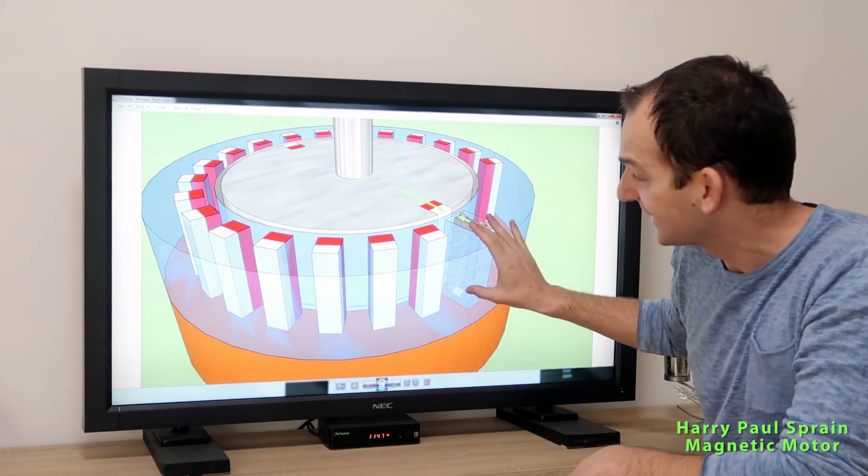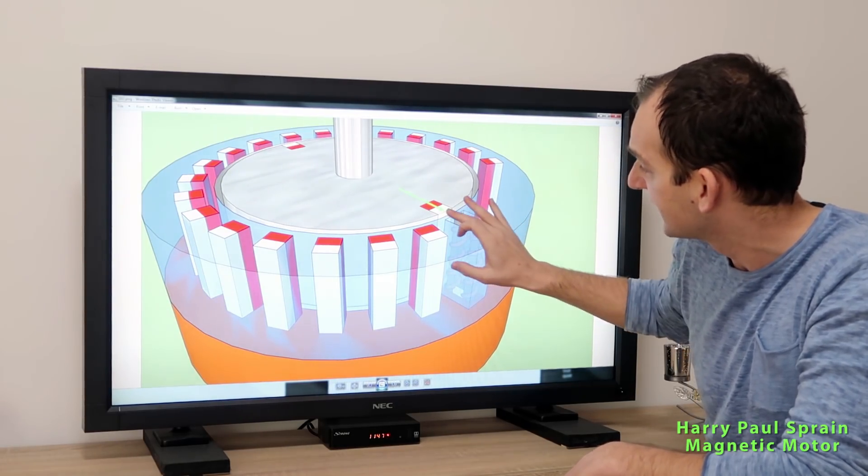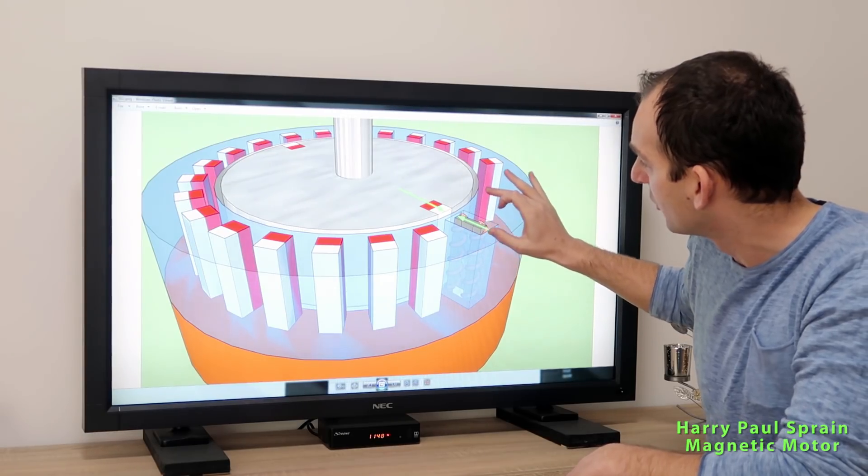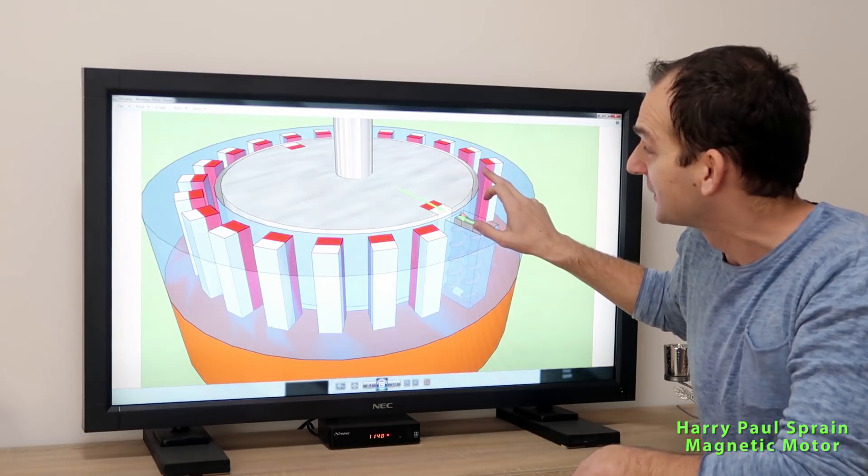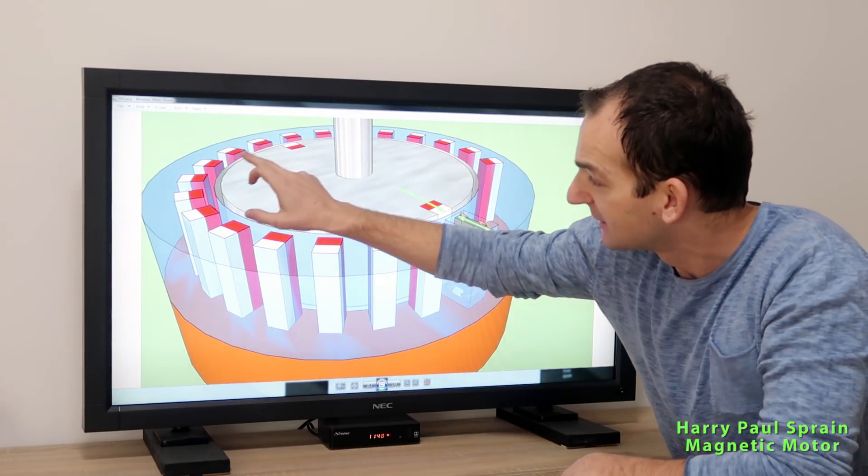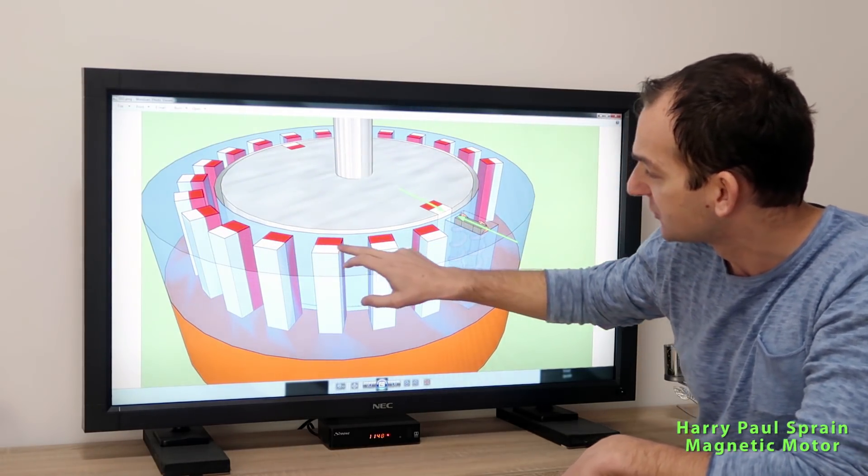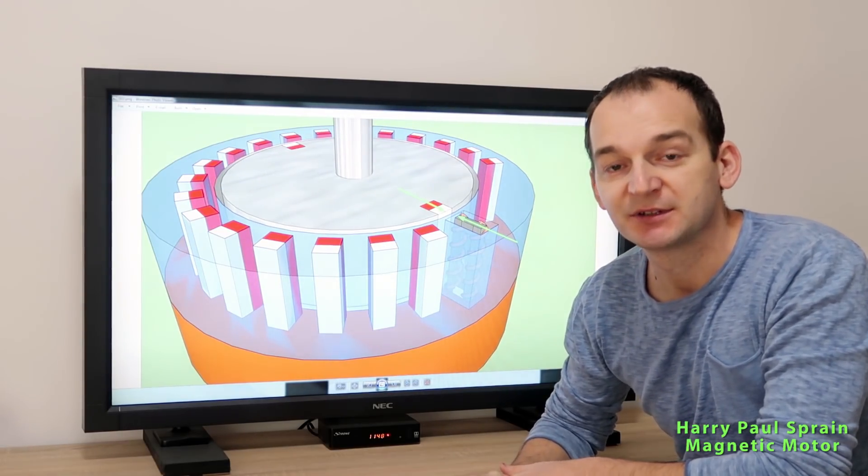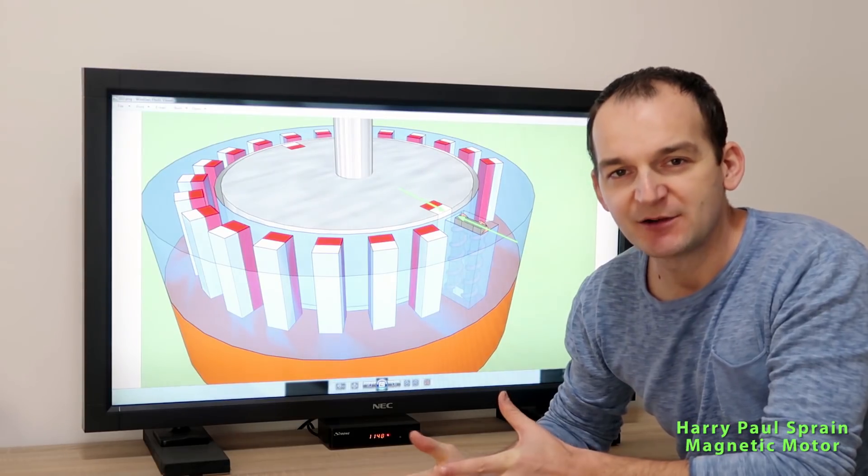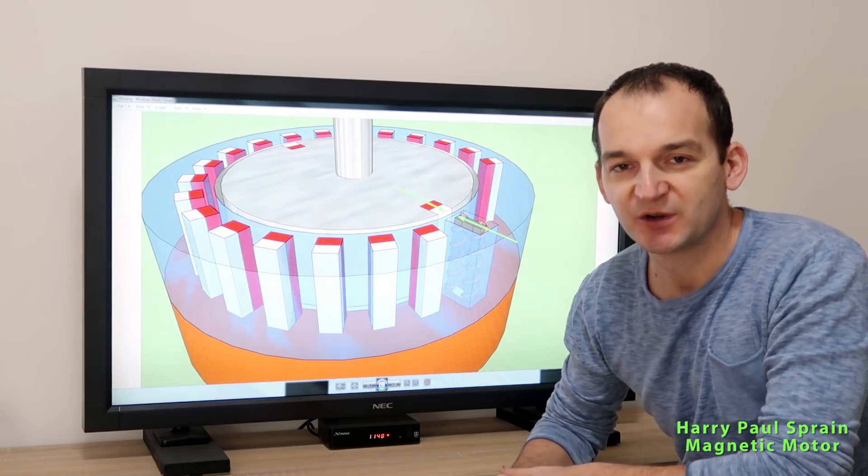Not to be stopped by the last magnet, it passes the last magnet and continues through this blank hole over here to the first attraction magnet on the stator, which will then continually attract because each magnet is closer to the rotor. And this spinning would continue. So this is how the Harry Paul Sprain magnetic motor should work.